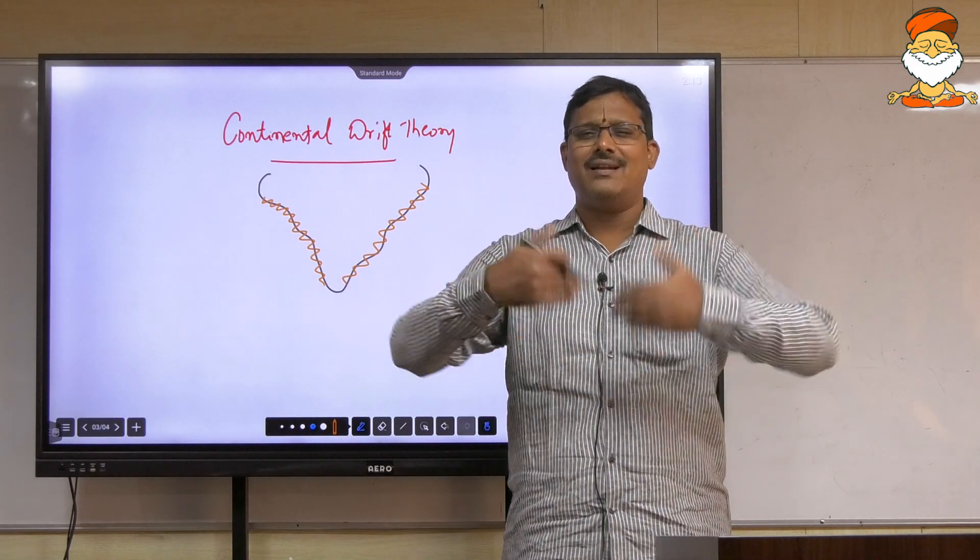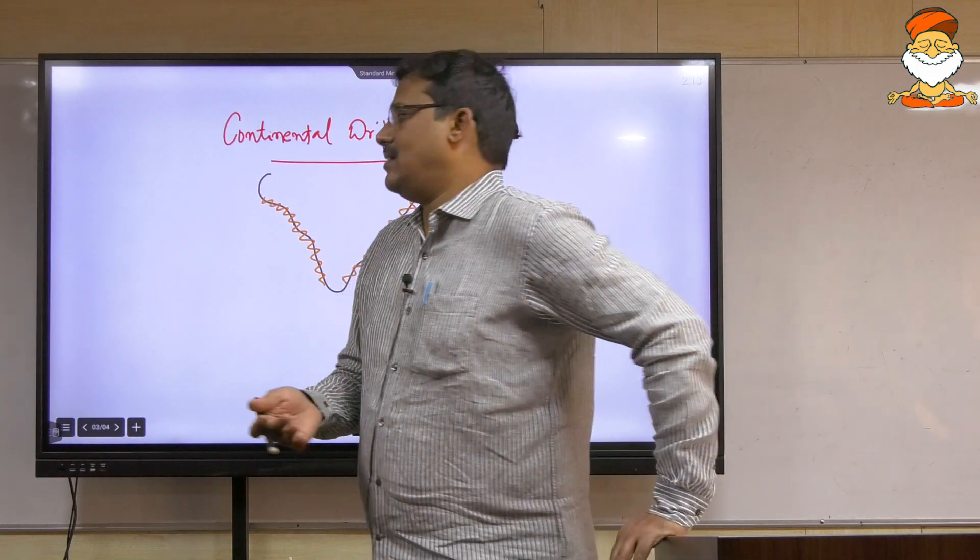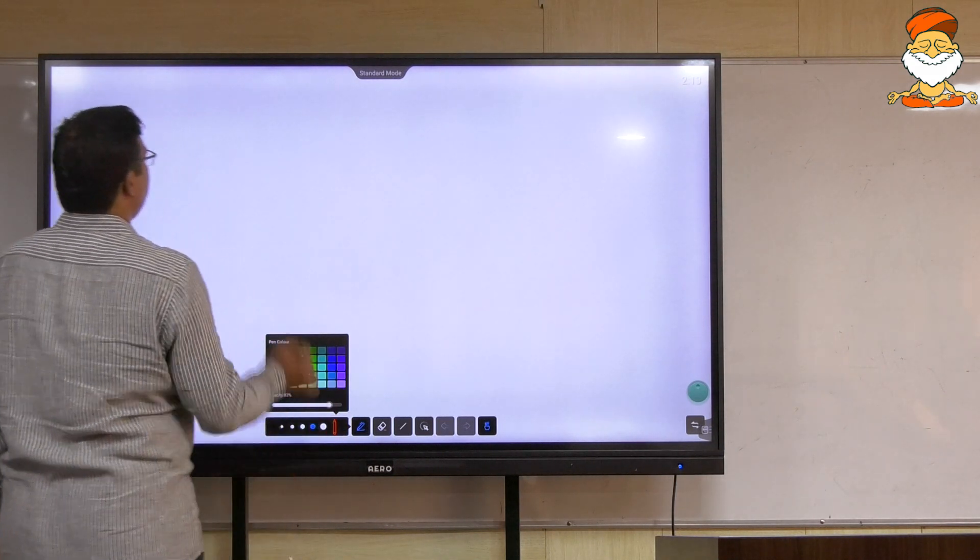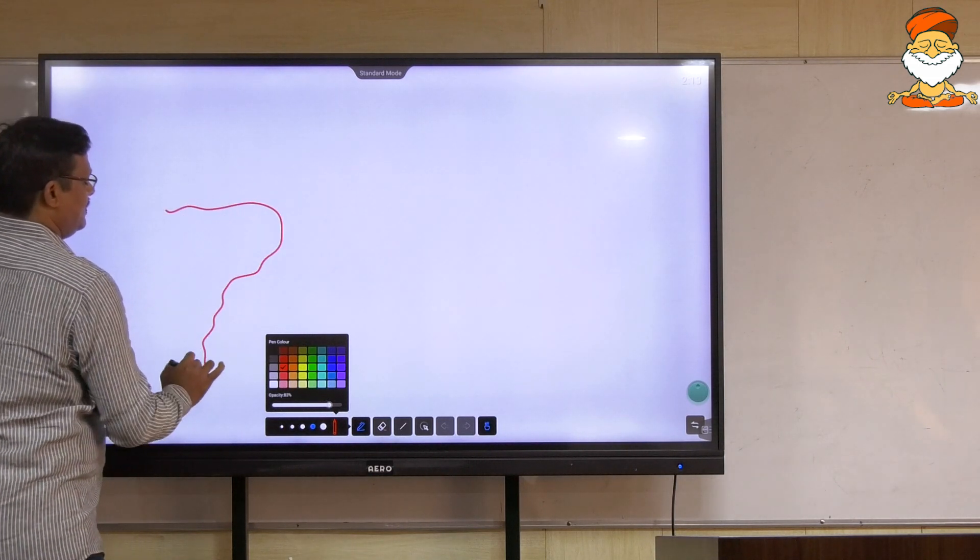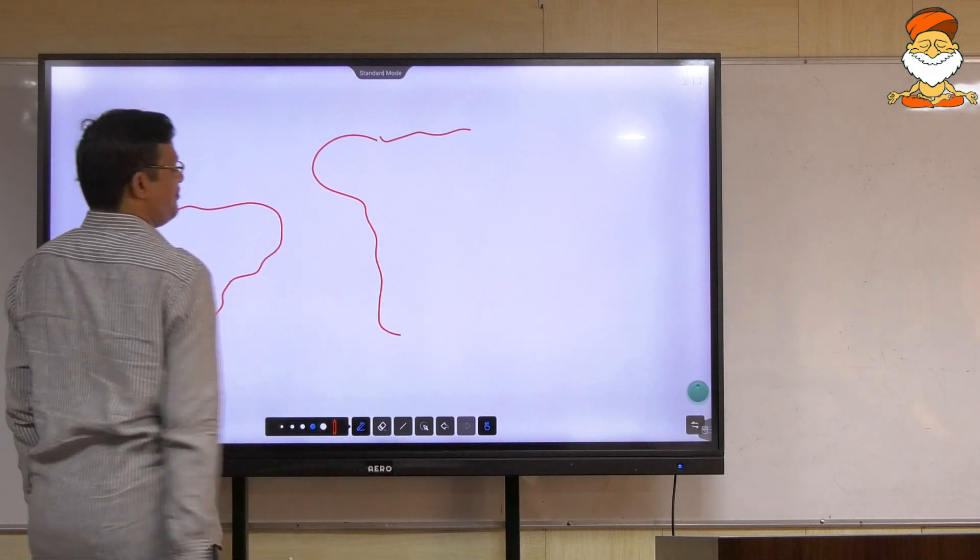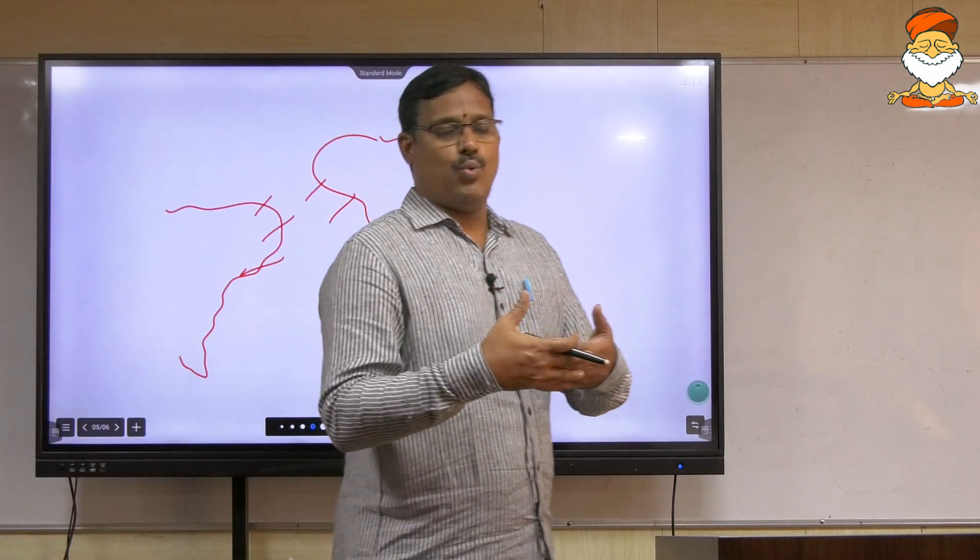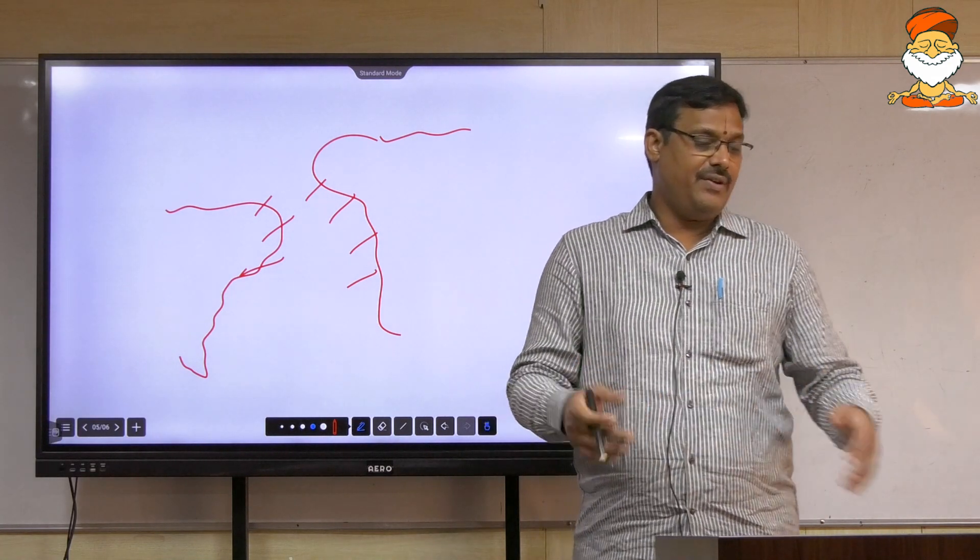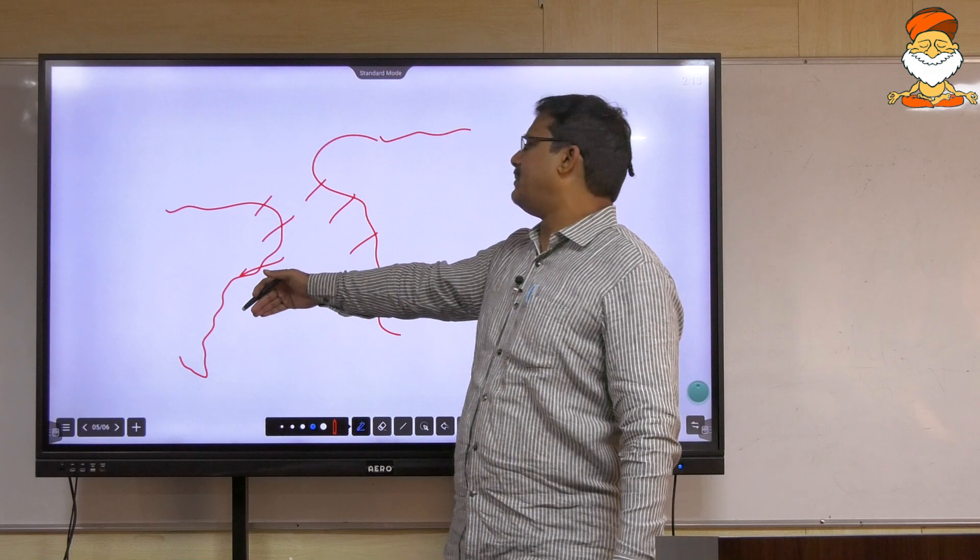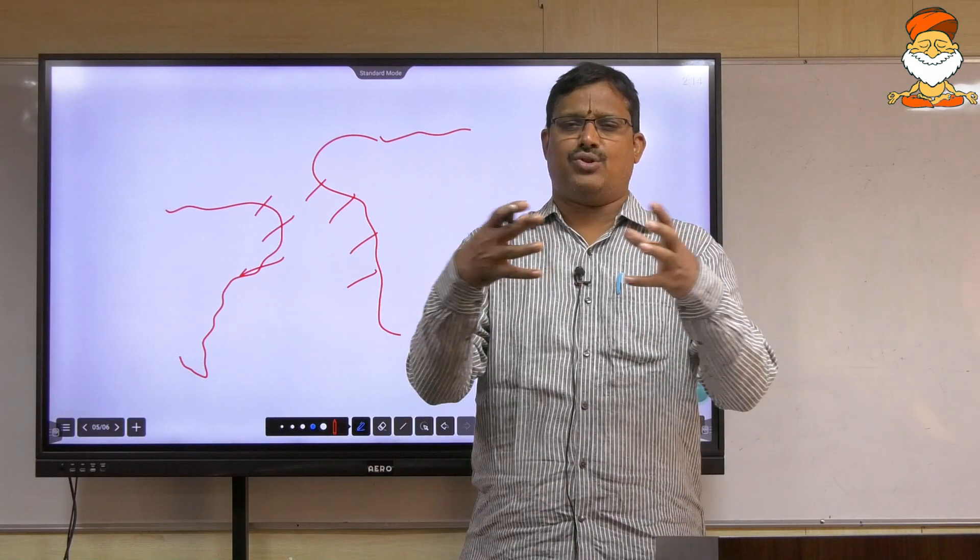And when Wegener got further interested into it, he had sit with the world map that was available, and he has seen that roughly whatever at that time available data he had, he could see that the eastern part of South America and the western part of Africa. These two coastal lines, they looked as if though they can be fitted into one and created as a one landmass, which he has called it as juxta-fit position. And it is not exclusively with South America and Africa, that is also possible with all the other continents when he tried to stitch them together, that is pull them together.